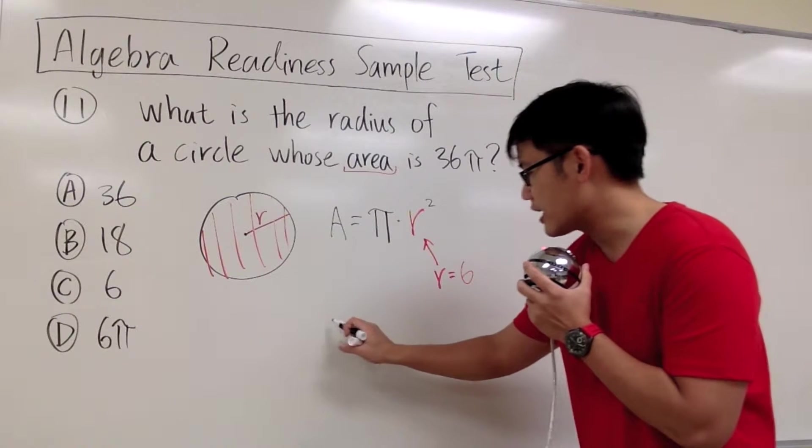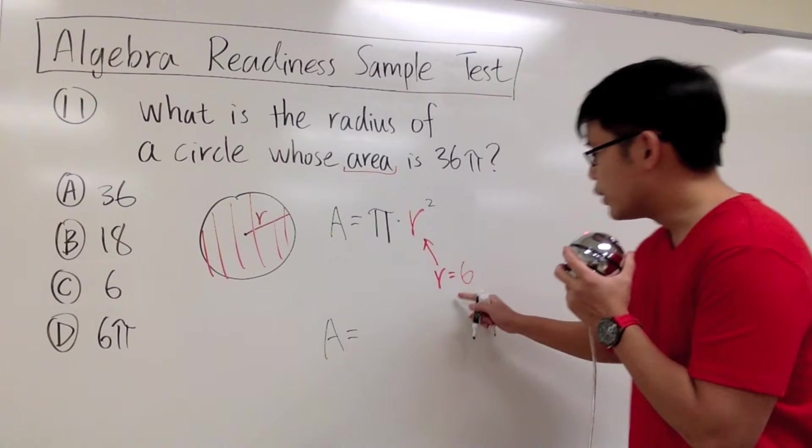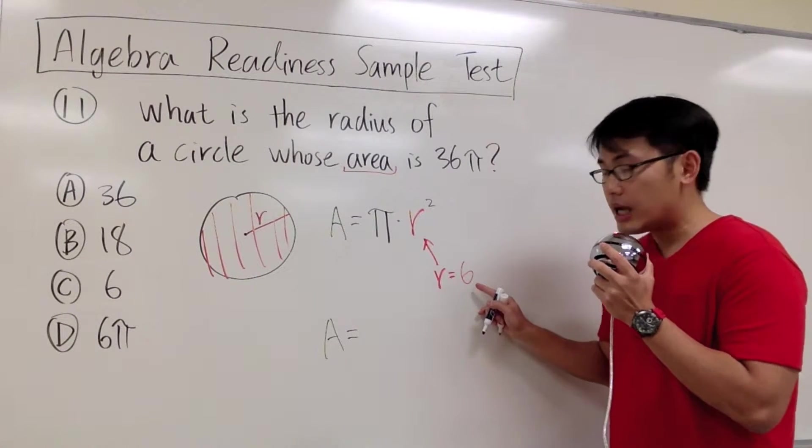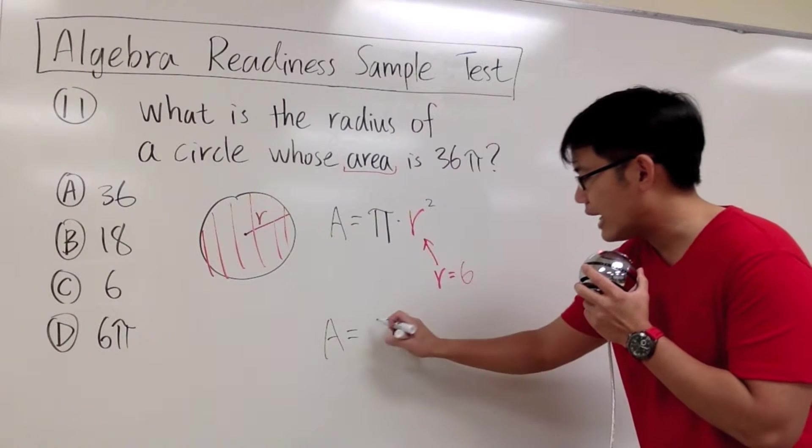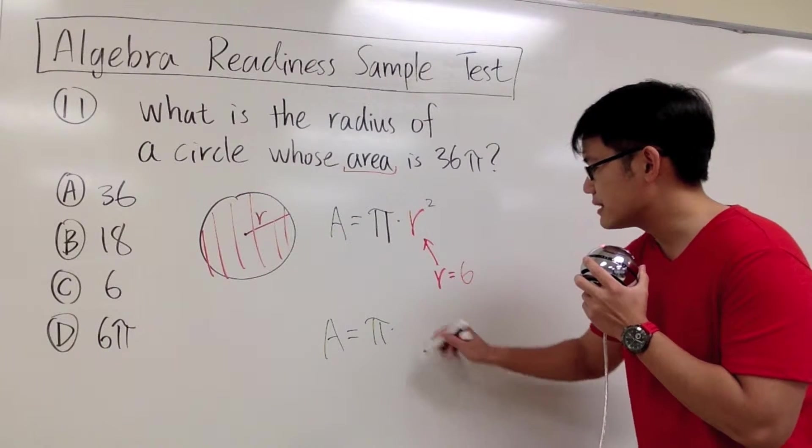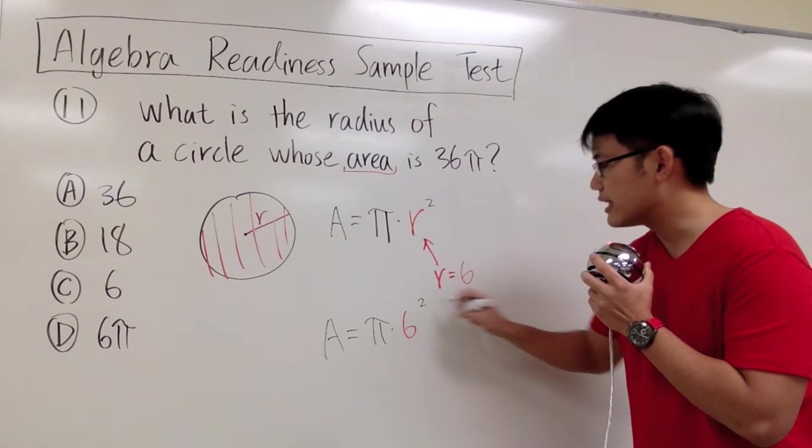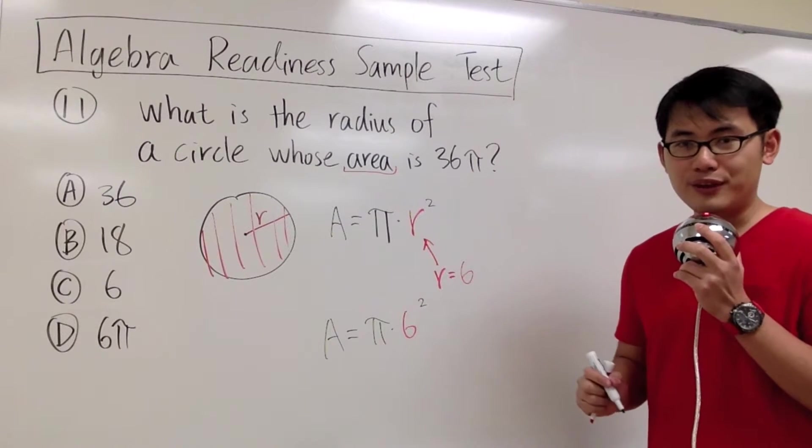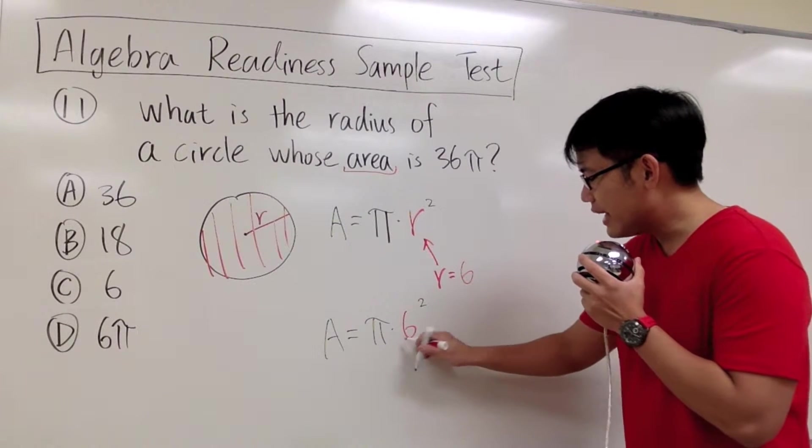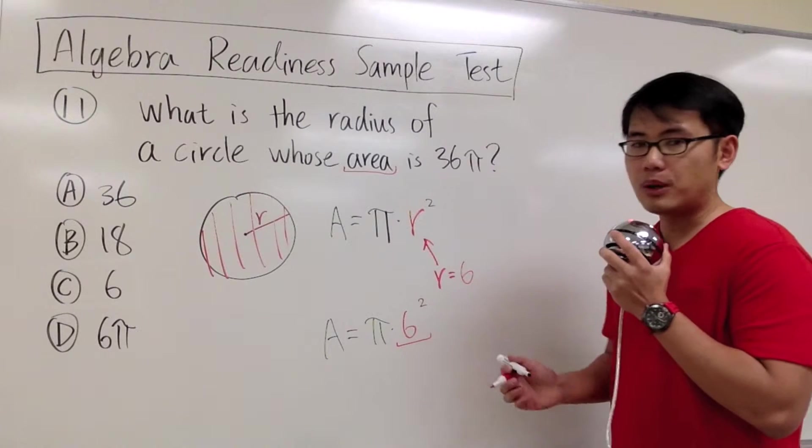And let me just show you the check. If the radius that we know is 6, after plugging 6 in here, we will have π times 6 raised to the second power. And what do we have to do first? We work out the exponent, the 6 to the second power first.